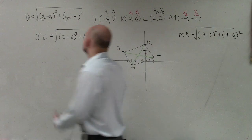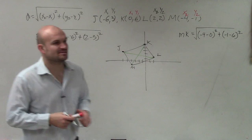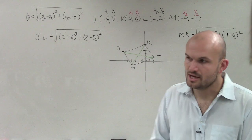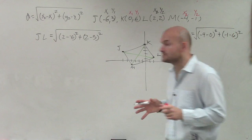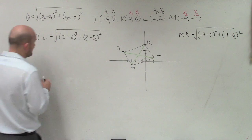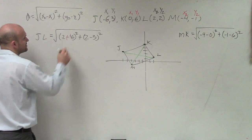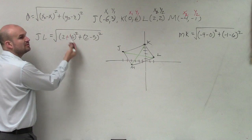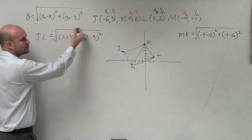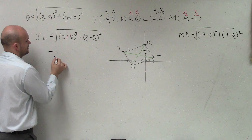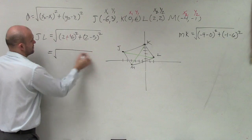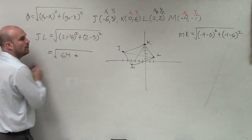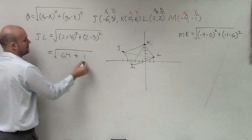Now guys, when you're doing the distance formula, I know a lot of you get mistaken because you don't follow the order of operations. Make sure you apply inside the parentheses first. And remember, when you have a double negative, that turns to a positive. 2 minus negative 6 is now 2 plus 6, which is 8. 8 squared is 64. 2 minus 3 is negative 1. Negative 1 squared is 1.